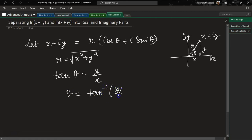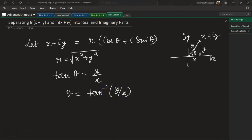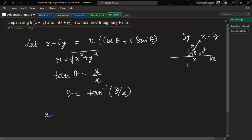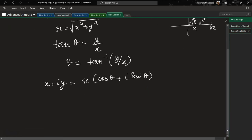Now let's start with the original statement: x + iy is equal to r(cos θ + i sin θ). Now what we are going to do is take the log of both sides.